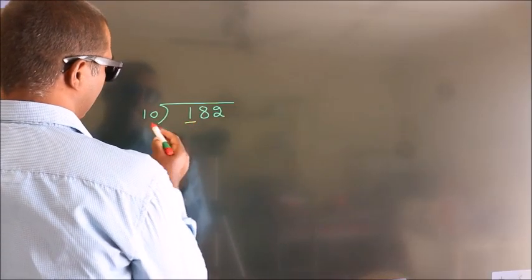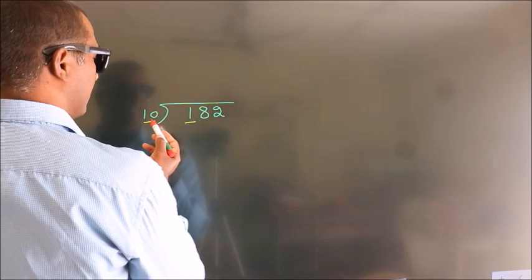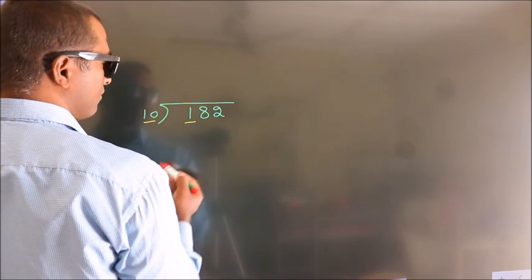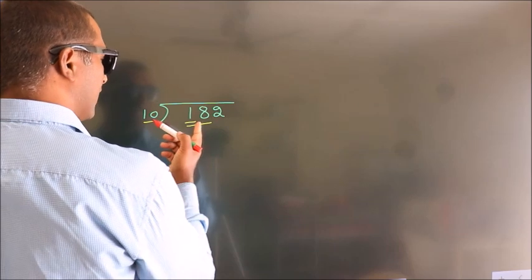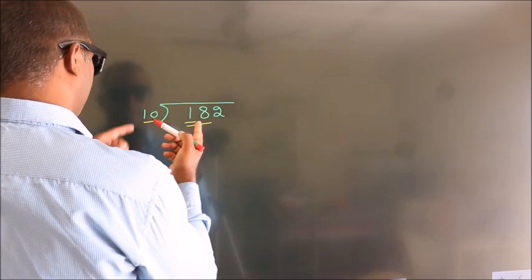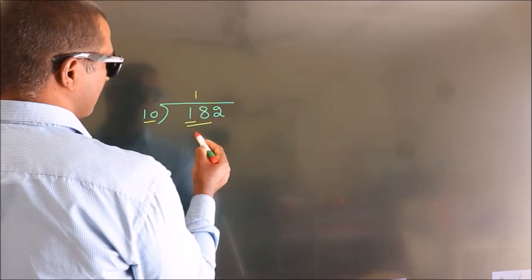Here we have 1, here 10. 1 smaller than 10, so we should take 2 numbers: 18. A number close to 18 in the 10 table is 10 once, 10.